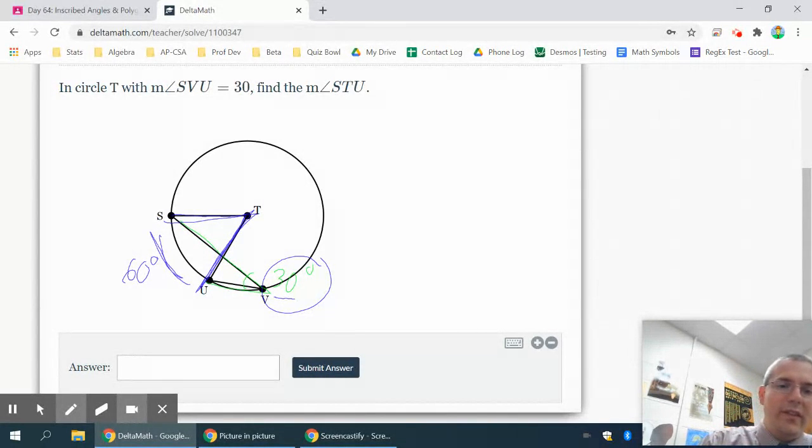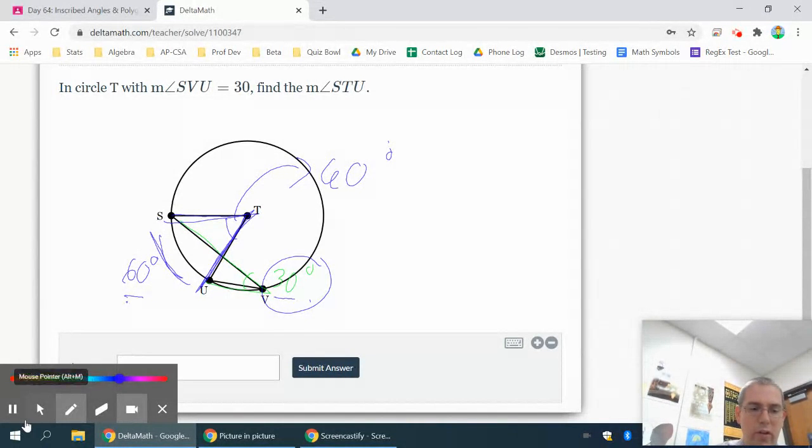Now, since this is a central angle, if this is 60 degrees, this angle at T, which is what it was looking for, is also 60 degrees. So notice how I used an angle to get an arc, and I used an arc to get another angle. That's very important in geometry problems. A lot of times you have to use what they've given you to get something else, and then use that to get what you actually want. So we'll try another example.